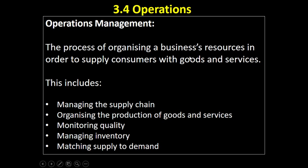A business has resources: it has its natural resources, its land, its raw materials, it's got people, it's got labour, it's got capital which is machinery. And it has to organise its people, its machinery and its raw materials so that the business can supply consumers with the goods and services that they've said they're going to supply, when they've said they're going to supply them.